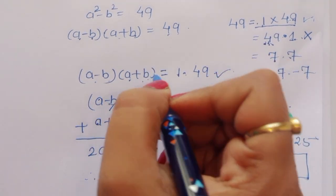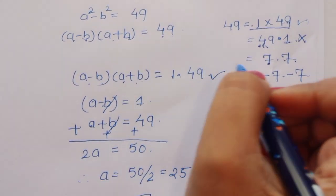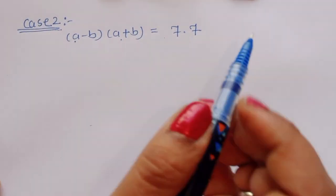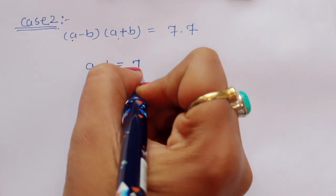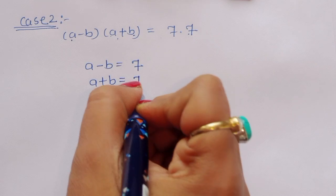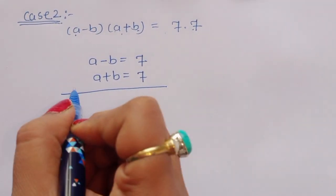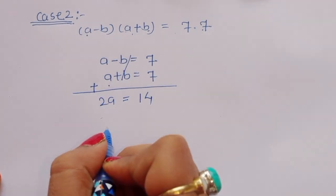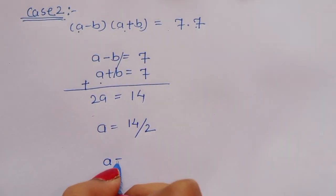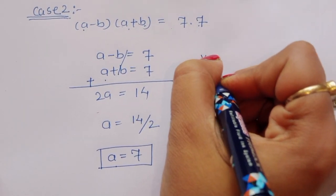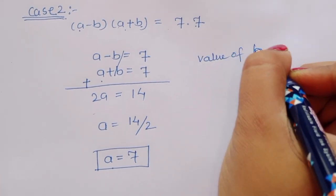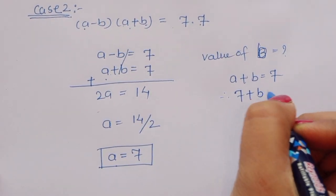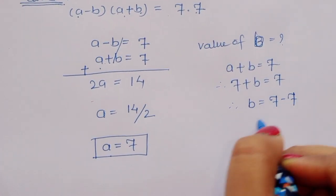Third condition: (a minus b)(a plus b) equals 7 times 7. Since a minus b equals a plus b, we compare LHS and RHS: a minus b equals 7 and a plus b equals 7. Adding both equations: 2a equals 7 plus 7 equals 14, so a equals 7. For b: a plus b equals 7, substituting a equals 7 gives 7 plus b equals 7, so b equals 0.